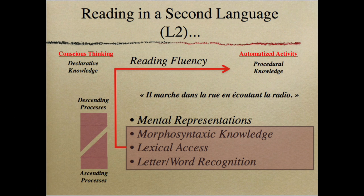Now if we go into reading as a second language, we see a very similar breakdown in terms of procedural and declarative knowledge. The first thing we have to do is recognize letters and words — that's easy if we're learning a language with the same alphabet, but difficult with a different one. So Chinese to French is a lot more difficult than English to French. Lexical access is simply vocabulary — when we see a word, are we able to recognize what it means? Morpho-syntaxic knowledge is simply grammar.